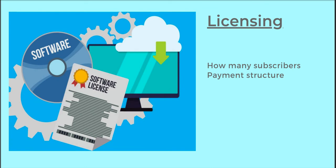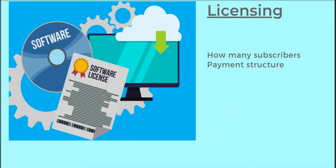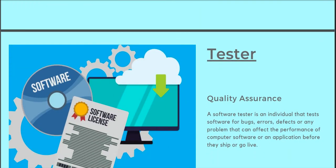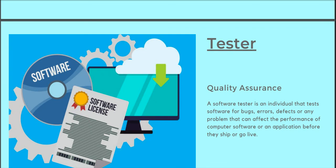The number of subscribers matters because companies are charged mainly based on that, along with the payment structure. Enterprise applications are not cheap at all — most people don't pay all at once and have to go through banks. Technology infrastructure is very expensive, especially the bigger enterprise applications, so payment structures are important to plan.